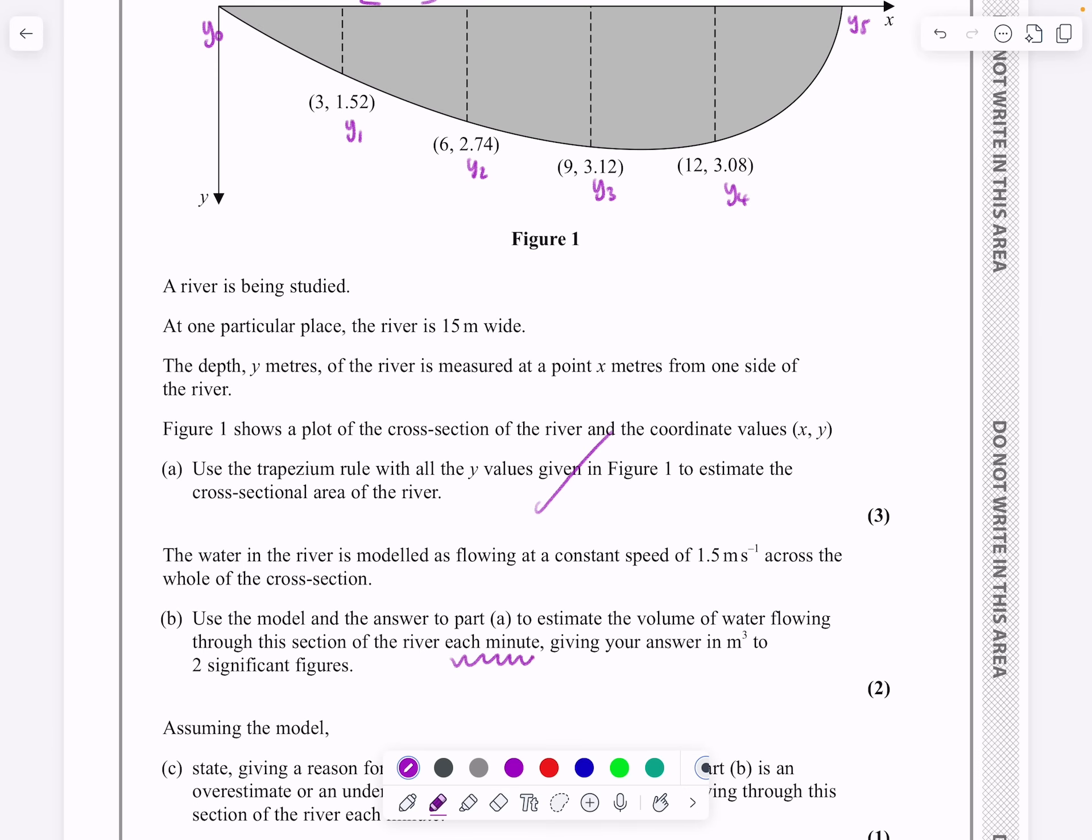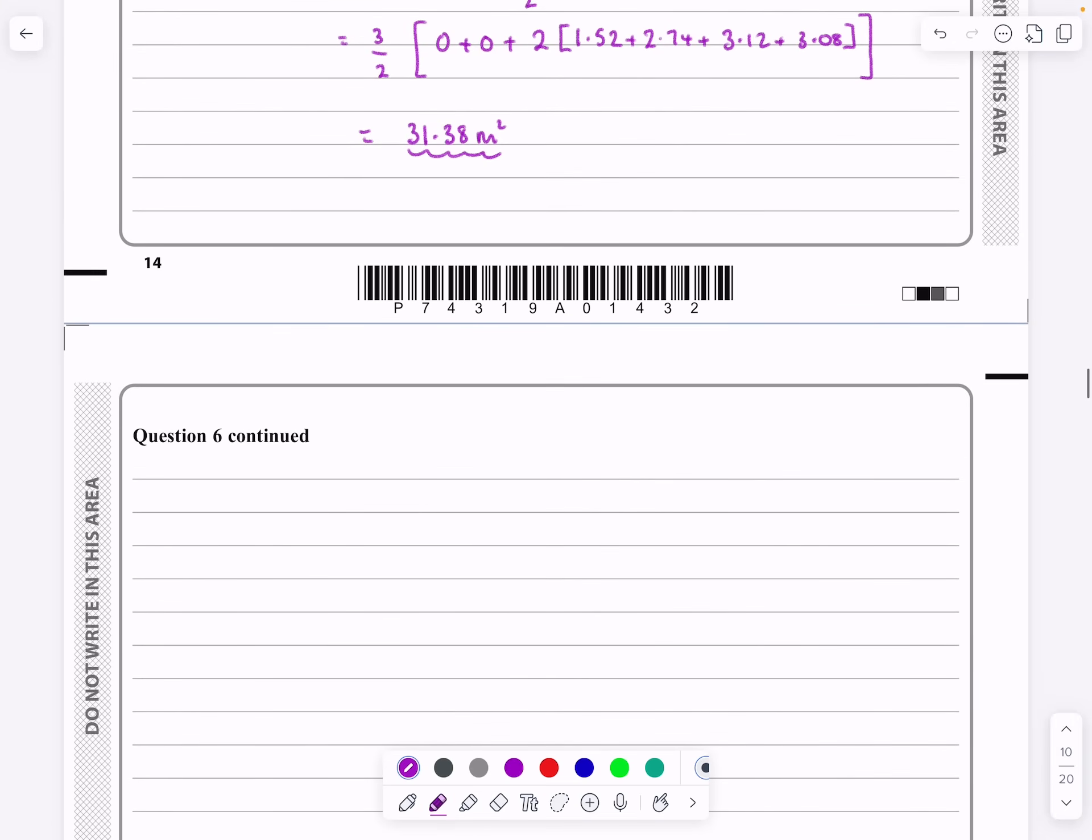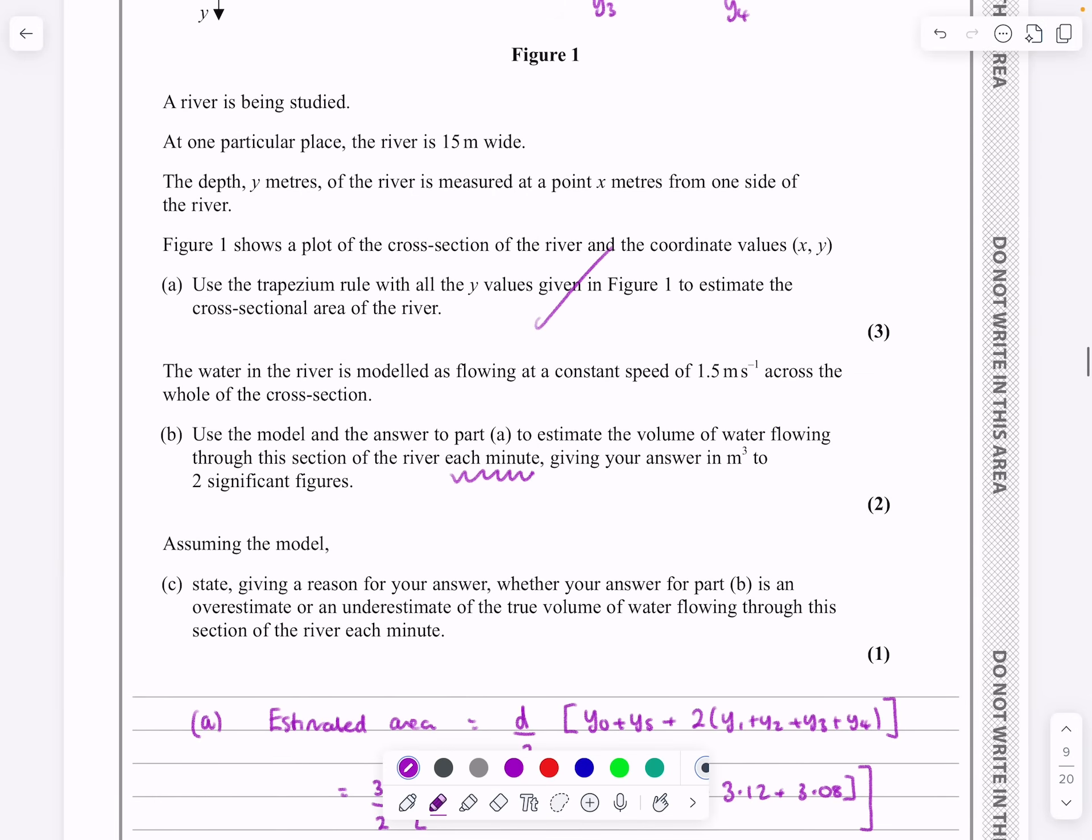Okay, so if I want to do that, I know that the volume is simply going to be, it's very straightforward, the volume is going to be that surface area multiplied by the rate, multiplied by the 1.5, and then multiplied by 60, because that's rates per minute, sorry, rate per second, and we want it for one minute.